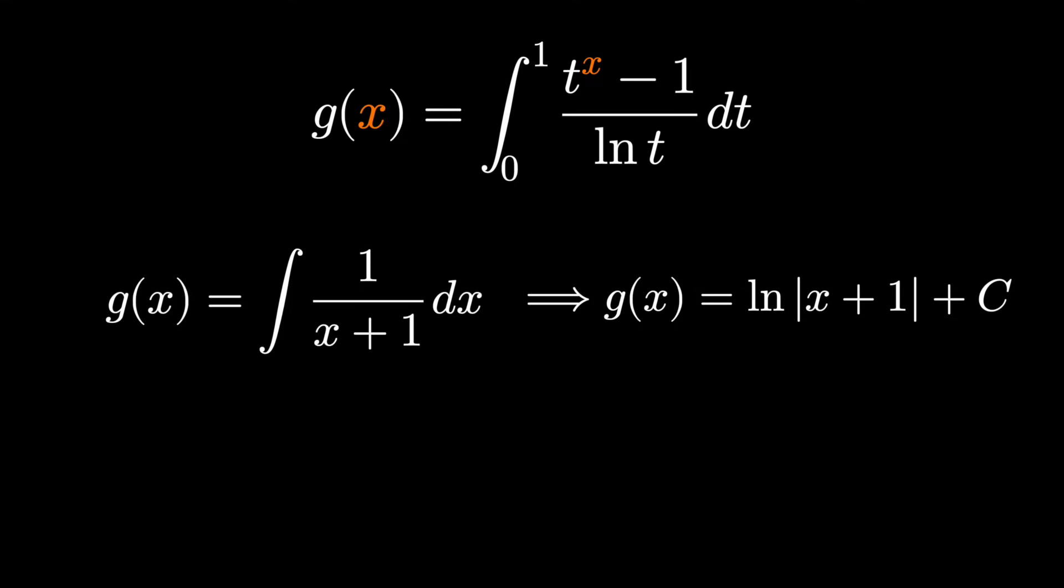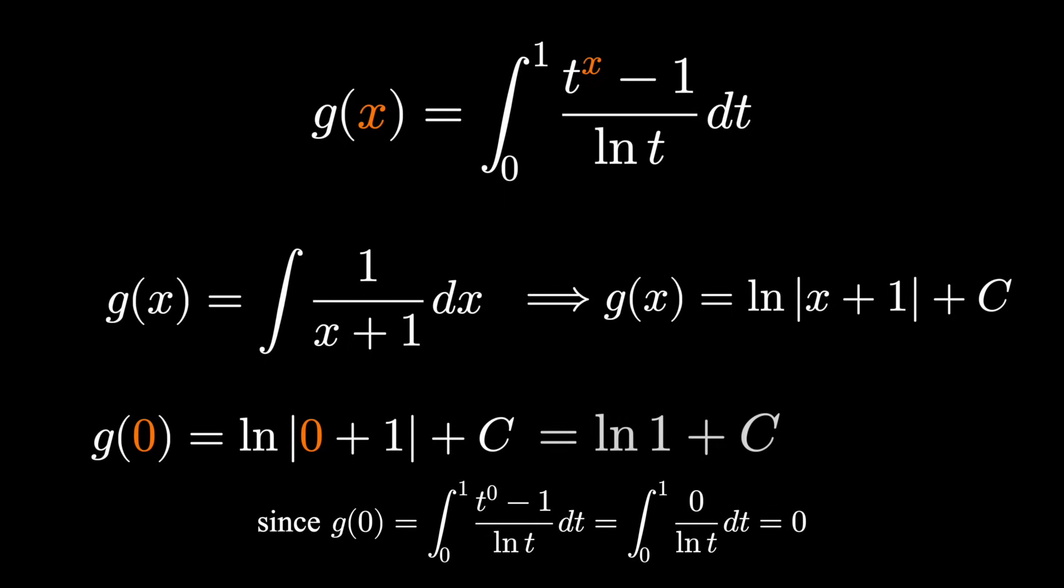This works out pretty nicely because if we substitute 0, natural log of 1 is 0, and so c is 0 as well. Our function is just natural log absolute value of x plus 1.